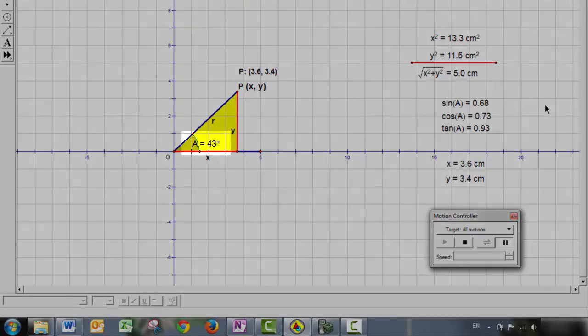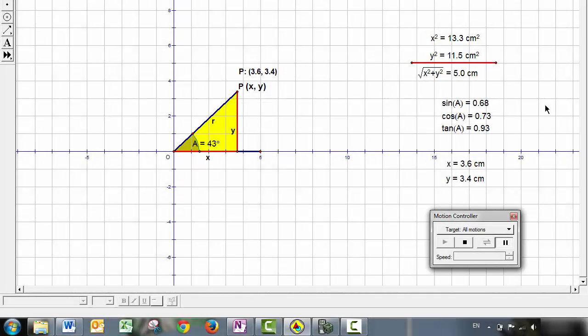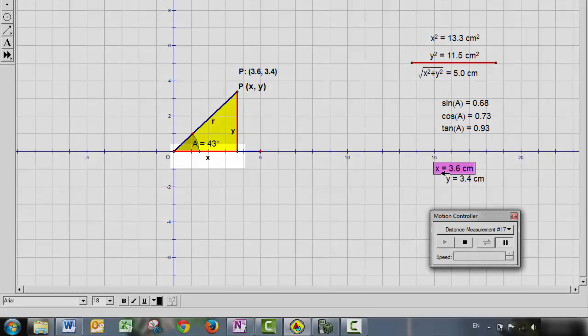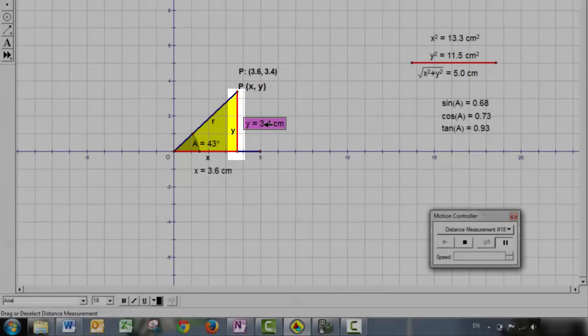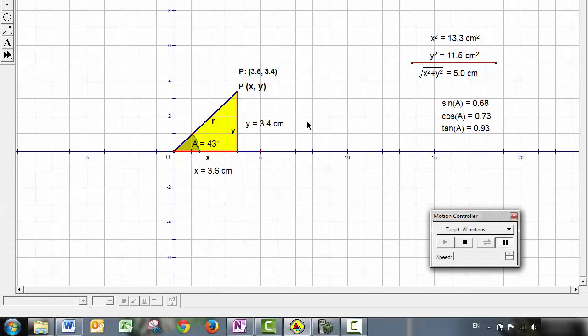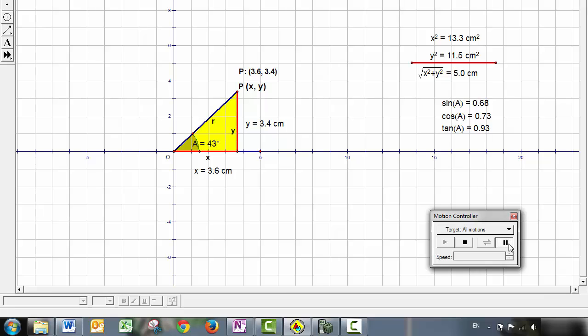For an angle A in standard position, there's a point P located on the terminal arm with coordinates X, Y, where X is equal to the length of the leg on the initial arm, and Y is equal to the vertical leg of the right triangle. And as the angle rotates, we can see that the distance from the origin to point P is actually just the radius of the circle that's formed. And therefore, by the Pythagorean theorem, we have X squared plus Y squared equals R squared.